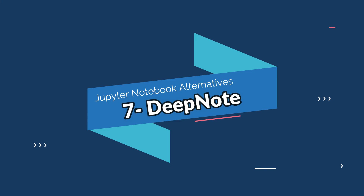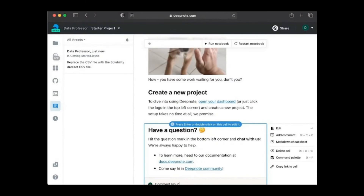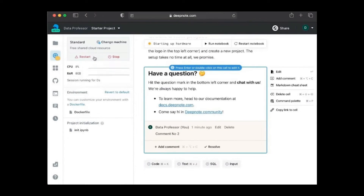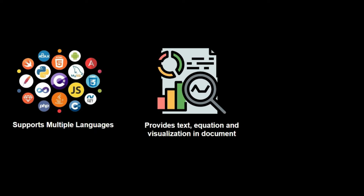On number seven, we have DeepNote, which is a cloud-based data science notebook platform with a focus on collaboration and real-time editing. Some cool features of DeepNote include the ability to allow users to write and execute code in a variety of programming languages, include text, equations, and visualizations in a single document. DeepNote also has a built-in code editor and supports a wide range of libraries and frameworks.